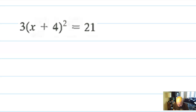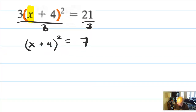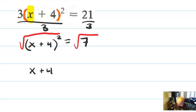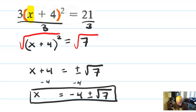You're asked to solve for x, not just expand. So if there's a single x, go ahead and isolate the squared term by dividing everything by 3. We get (x + 4)² = 21/3 = 7. Now take the square root of both sides: x + 4 equals positive or negative square root of 7. Don't forget your plus or minus. Subtract 4, and you get x = −4 ± √7. Easy — three steps.